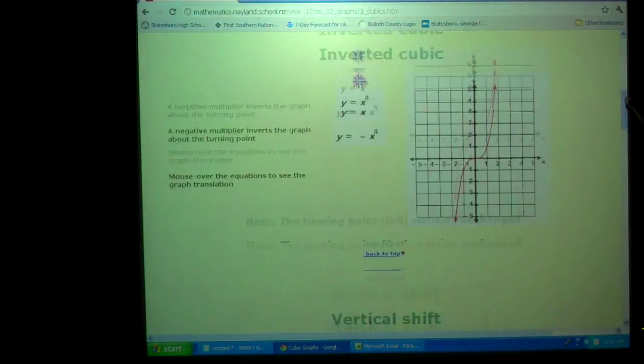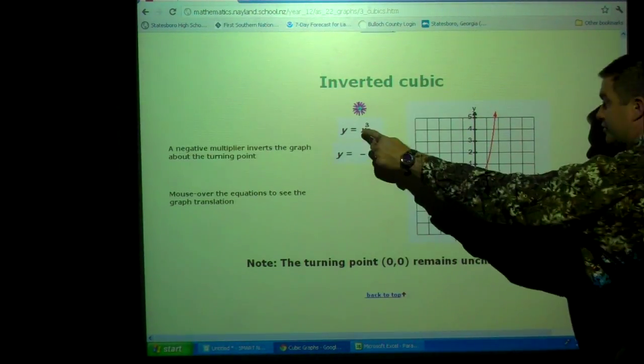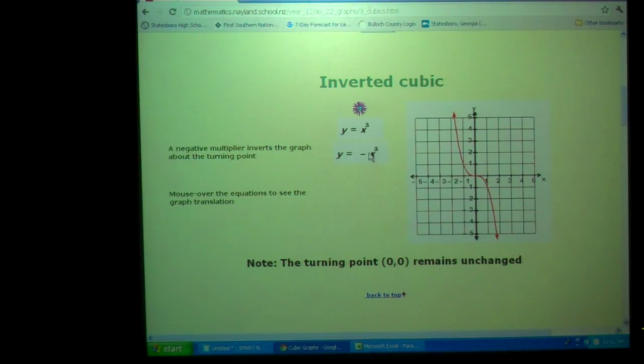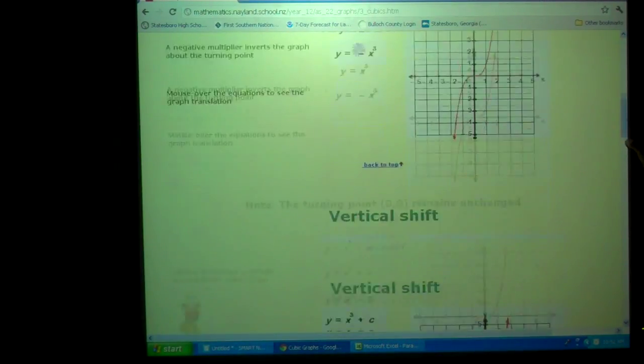Because if you go back to this one, right, if you go back to this one, they are standard. Right? And if I put a negative out front, if a is negative, then it always looks like that. Always, always, always. Okay? Good questions. Alright, let's go back.